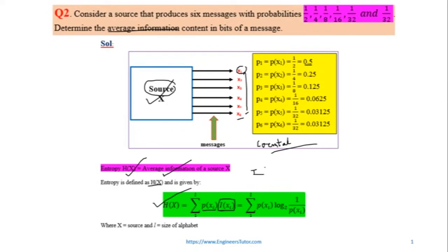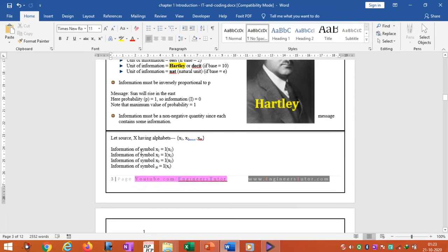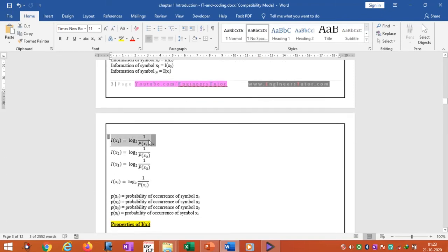We multiply probability of the message and I(x) is the self-information. Suppose if X1 is there, you can find the definitions in my PDF material. Self-information of message one: we multiply self-information with probability and we take the summation over the alphabet. L is the alphabet means number of messages. Here L is equal to six, so where source X is source and L is the size of the alphabet, the number of messages. You can see the definitions for information measurement or self-information in my PDF notes. What is information of symbol X1 and so on. See, this is the definition of self-information.